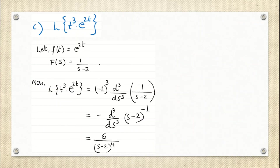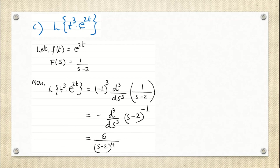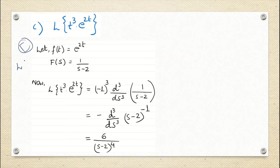The third question is Laplace transform of t³·e^(2t). We had solved this same question in the last class using the frequency shift property. Now we are going to solve it using today's formula for multiplication by t^n. Step 1: find Laplace transform of f(t), which here is e^(2t). L{e^(2t)} is 1 by (s minus a) with a = 2, so it is 1 by (s minus 2). First step completed.